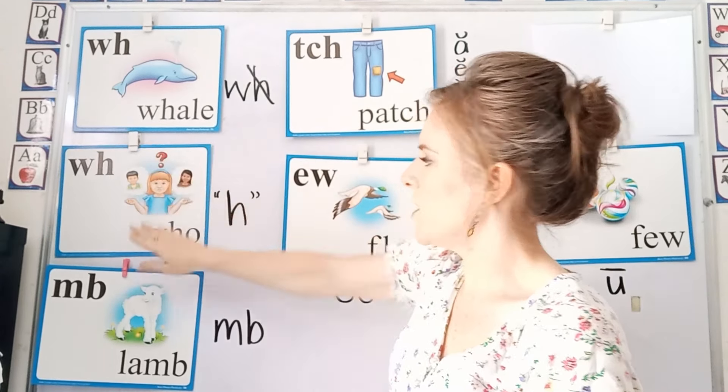Then we have the CH in patch. With this word, the T is silent — it's just CH. But it usually follows a short vowel sound. For example, fetch is a short E; match is a short A; catch, short A; stretch, short E; hatch; and pitcher, short I. So this special sound is TCH — the T is silent, but it usually follows a short vowel sound.